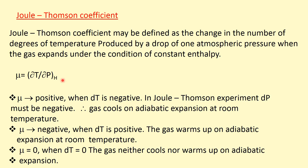In the Joule-Thomson experiment, the pressure change is always negative because the gas passes from high pressure to low pressure. So when mu is positive, dT is negative — meaning the change in temperature is negative, so the gas cools on adiabatic expansion. When mu is negative, dT must be positive — meaning the gas warms up on adiabatic expansion. When mu equals zero, dT equals zero — meaning the gas neither cools nor warms up on adiabatic expansion.